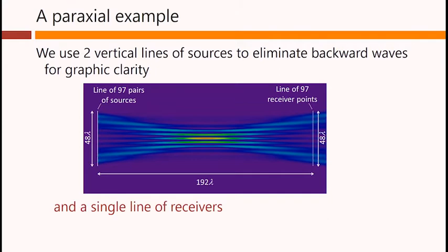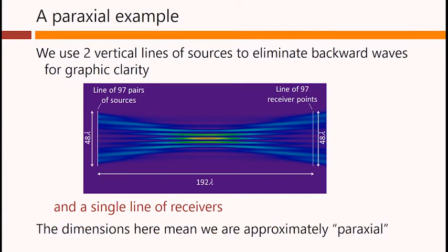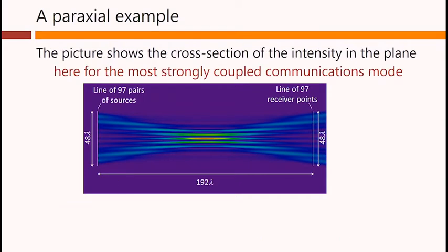And we have a single line of receivers. The line of receivers is over here. But now we have 97 of each of these. The dimensions here mean we are approximately paraxial. The picture we are showing here shows the cross-section of the intensity in the plane.